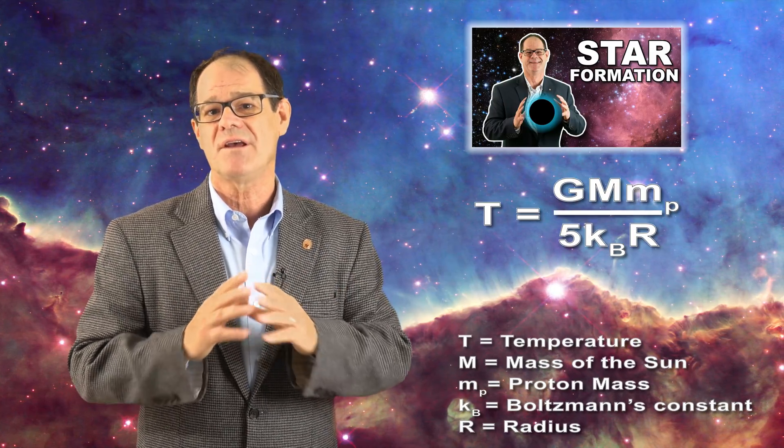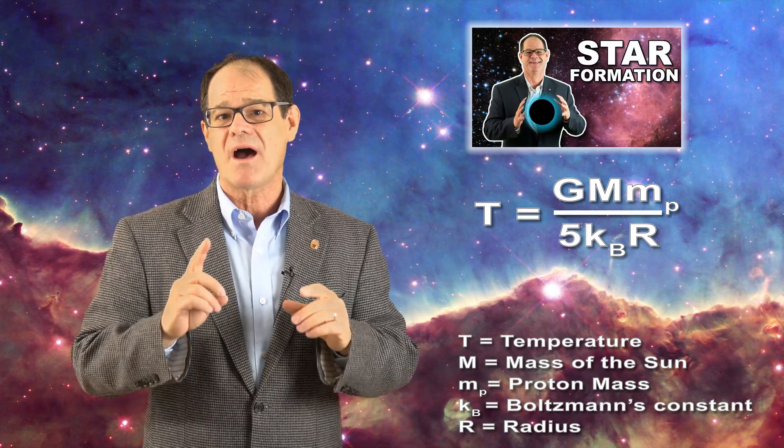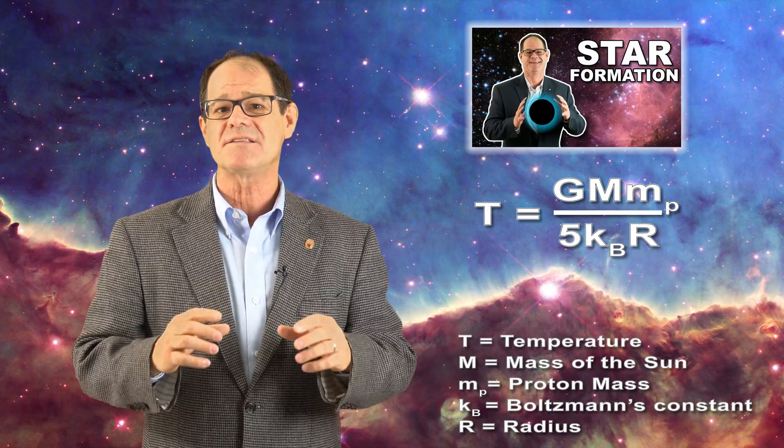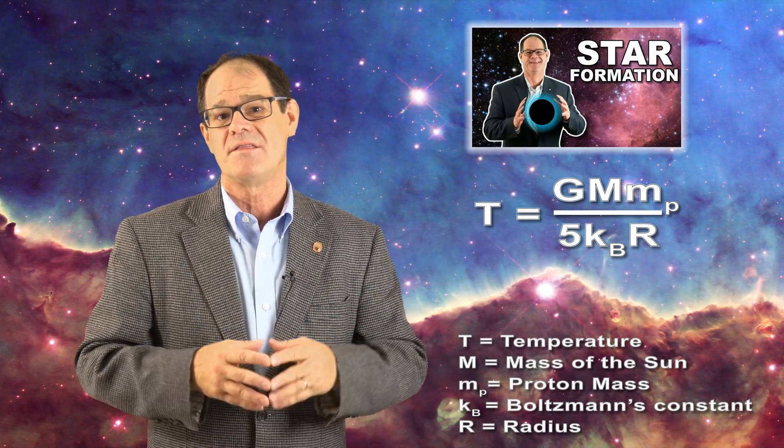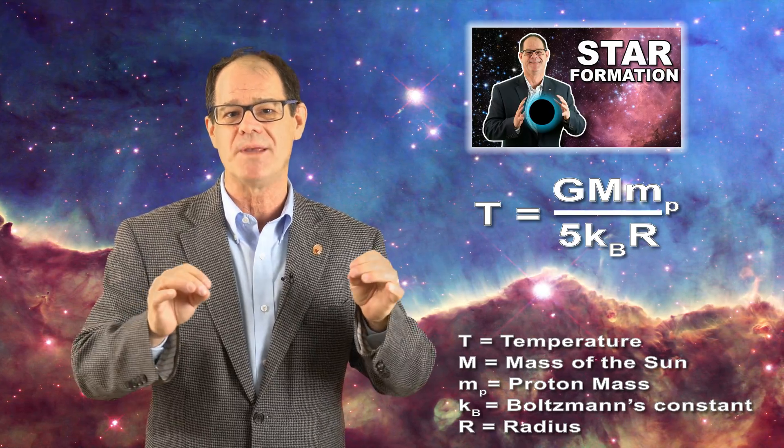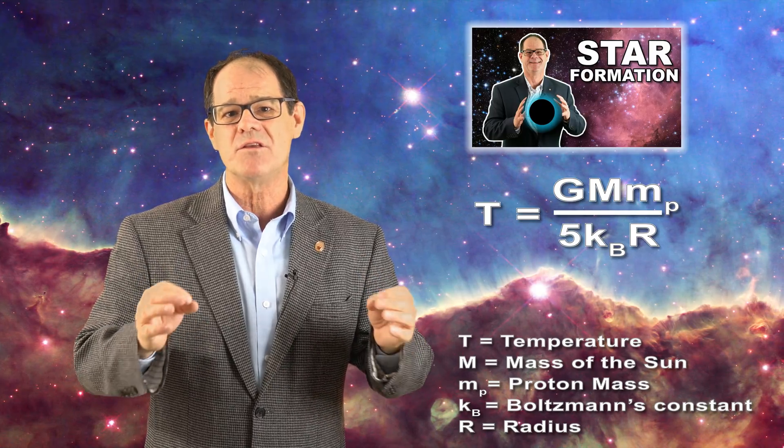But you recall from this video that Eddington also used the Virial theorem to obtain this expression for the temperature of a homogeneous star. At the time, I highlighted that this constituted a first law violation. A system cannot do work upon itself and raise its own temperature. The equation also violates the rule that temperature must always be intensive. So why is this happening? Why is it that the use of the Virial theorem does not work in this case?